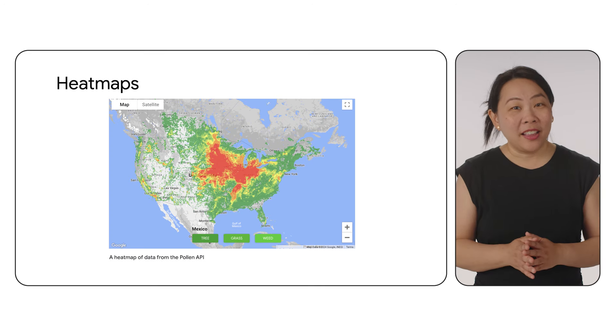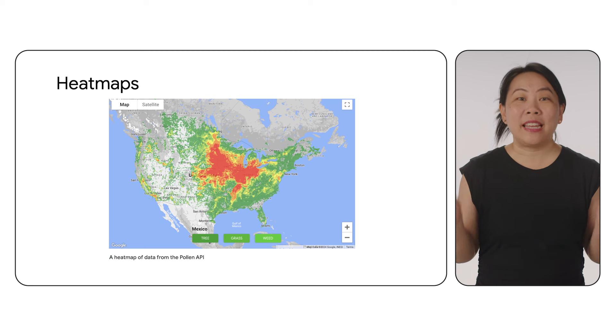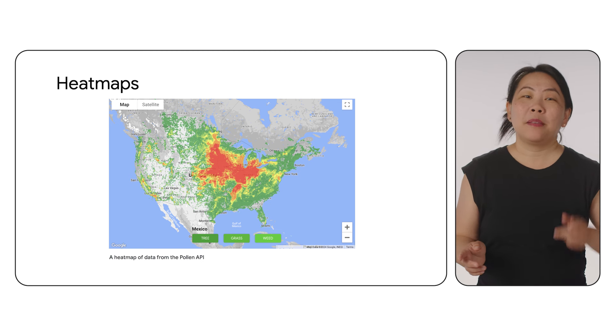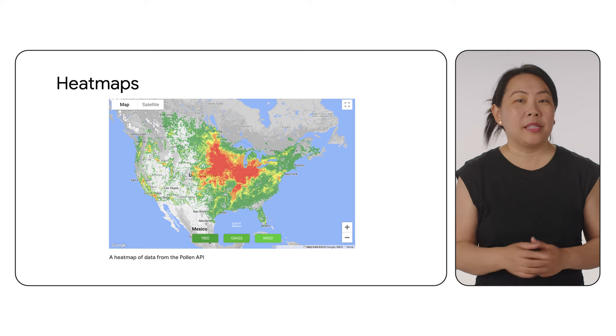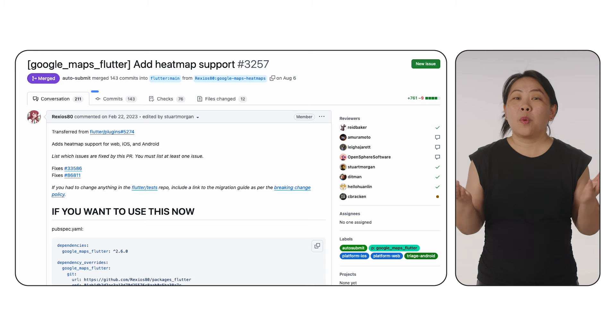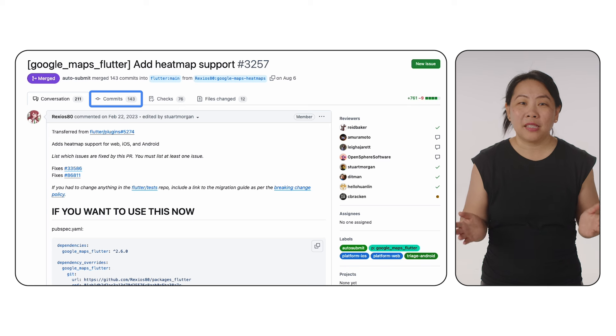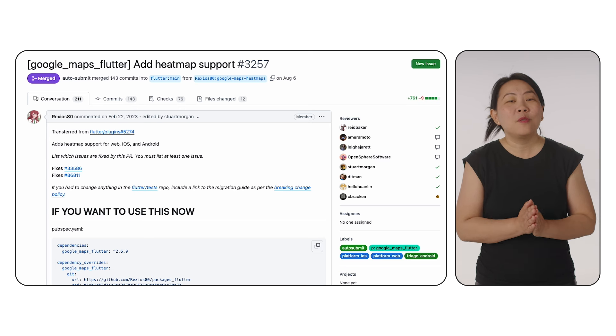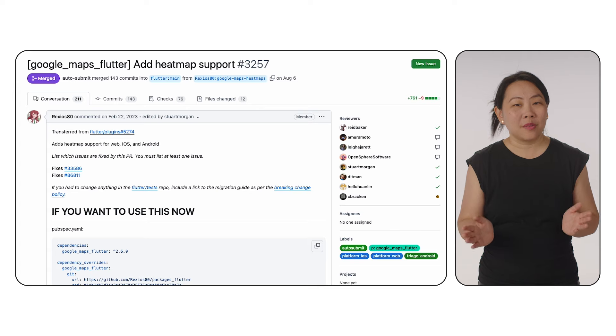Finally, another one of our highly requested features is support for heatmap layers, as seen in the Maps JavaScript API and the utility libraries for the Maps SDKs for Android and iOS. Thank you to community contributor Rexios80 for implementing this one for the Flutter community. This pull request had 143 commits and took over two years to get merged. Thank you for sticking with us through all the code reviews. As you can see, we're shaping this package together, which is one of the best things about Flutter and open source.